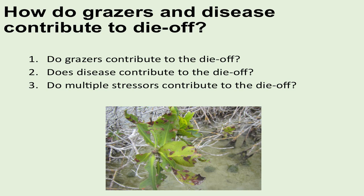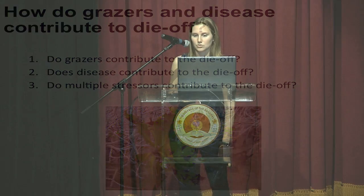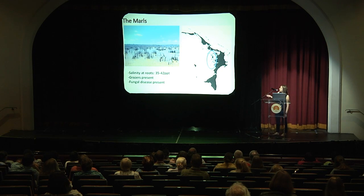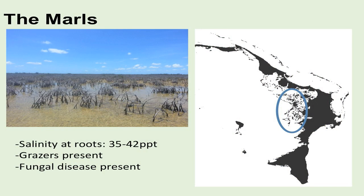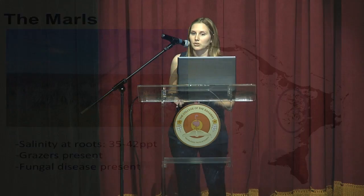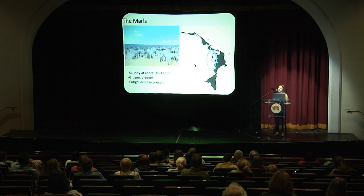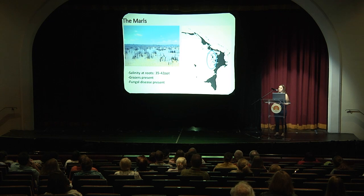The three questions are: What do grazers contribute to the die-off? Does disease contribute to the die-off? And are these stressors acting together? I'm talking about the marls on Abaco, which is an extensive flats region with quite an extensive die-off of dwarf red mangrove. What we know so far is that pore water salinity is between 35 and 42 parts per thousand, grazers like crickets are present, and there's a fungal disease present.